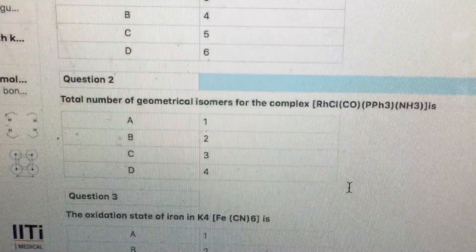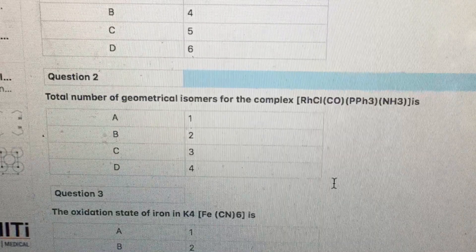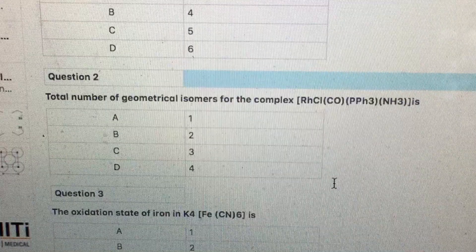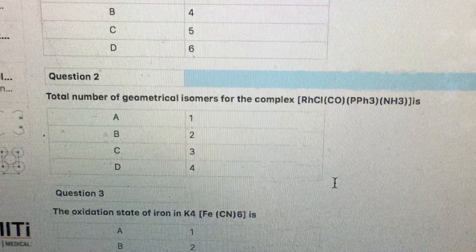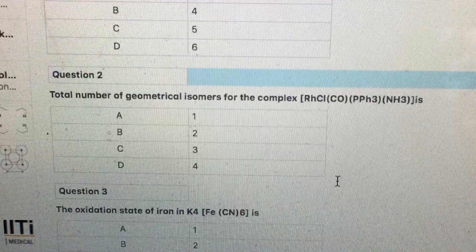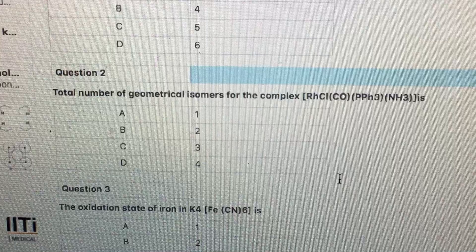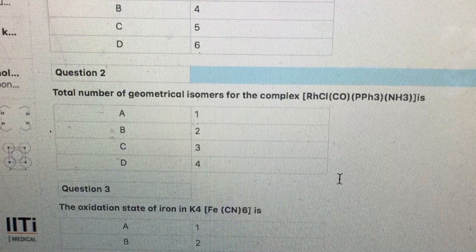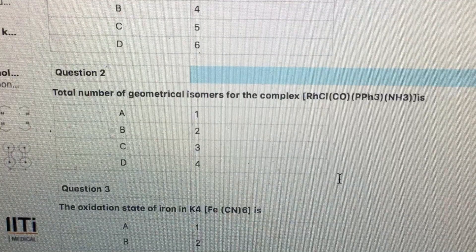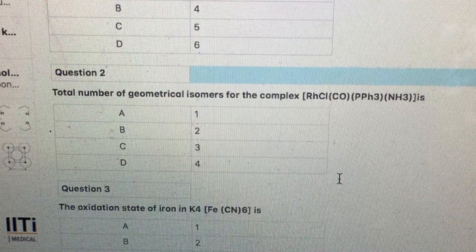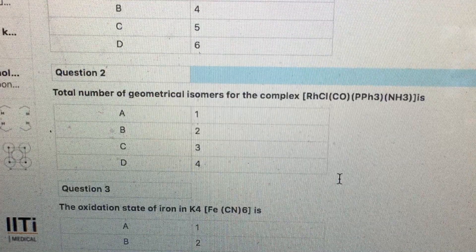Total number of geometrical isomers possible for a complex of type MABCD. Obviously, this is a known question. Answer is 3 because you can arrange these ligands only in 3 possible ways as pairs. Try to arrange all the available ligands in the format of pairs. As many sets are possible, as many complexes you get. Here you get 3.